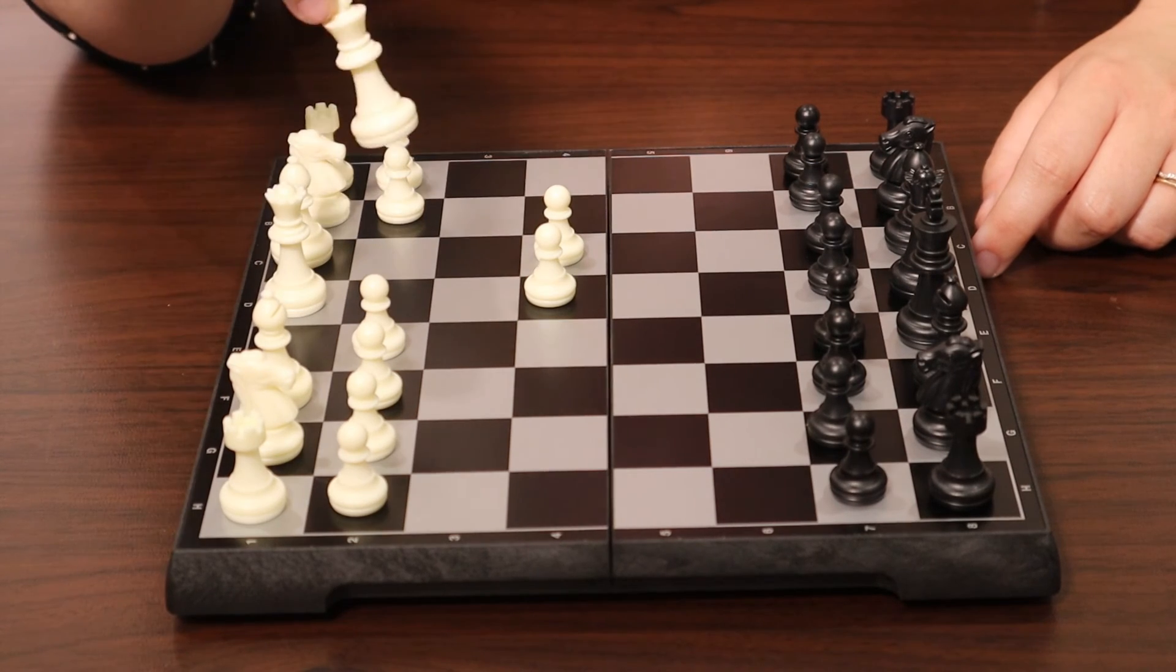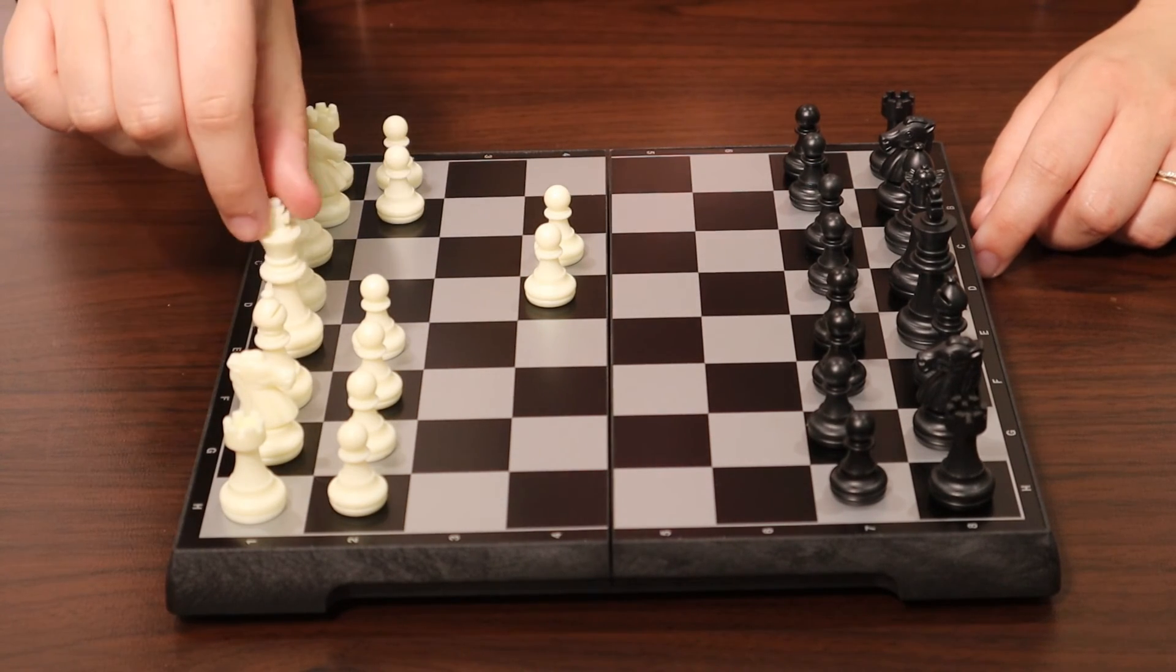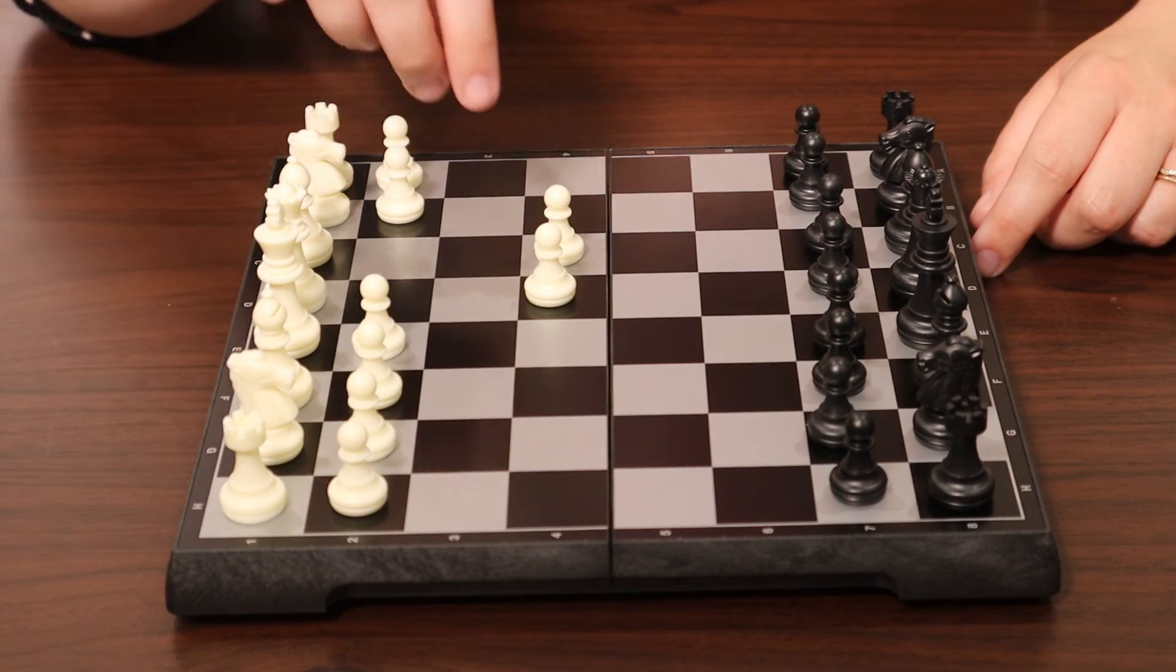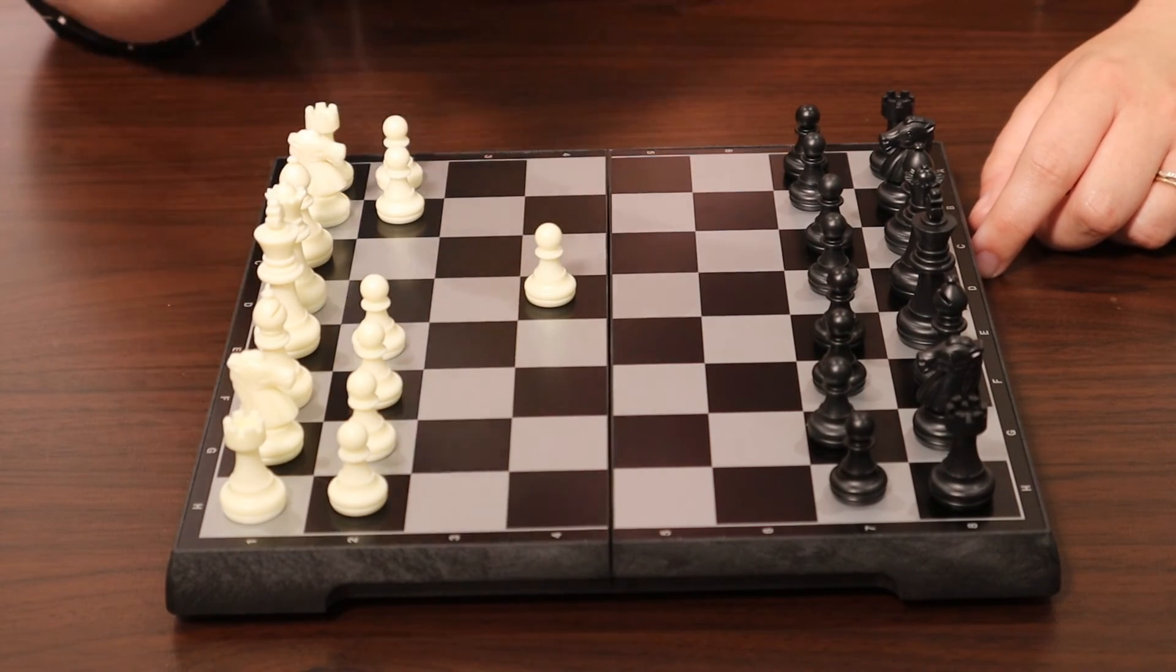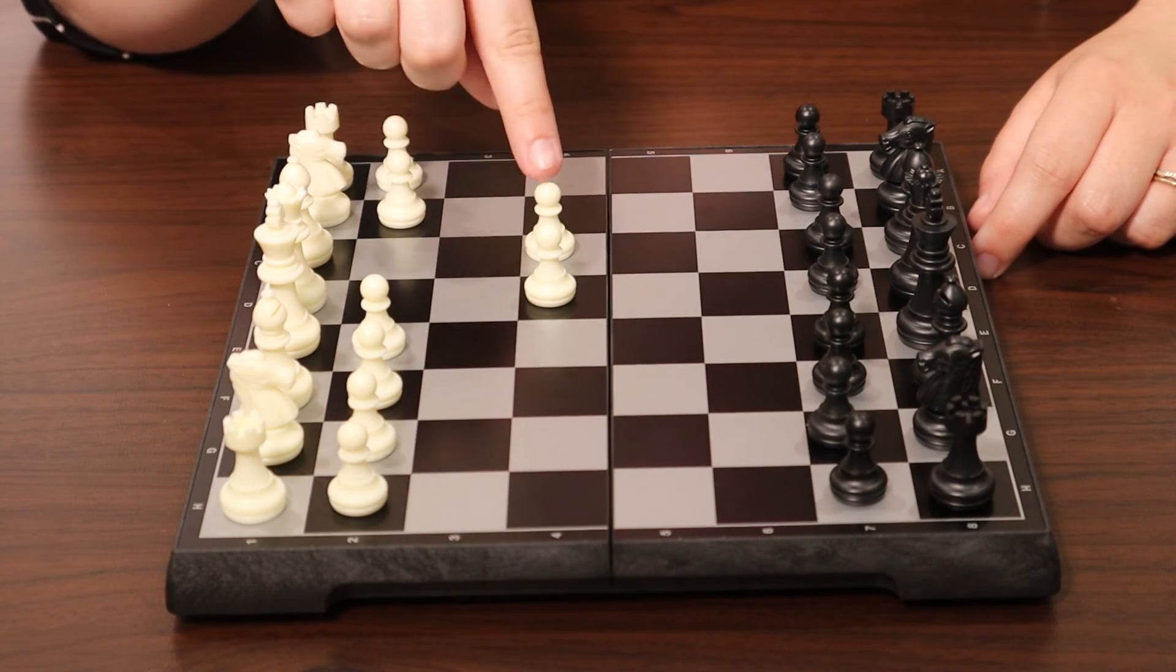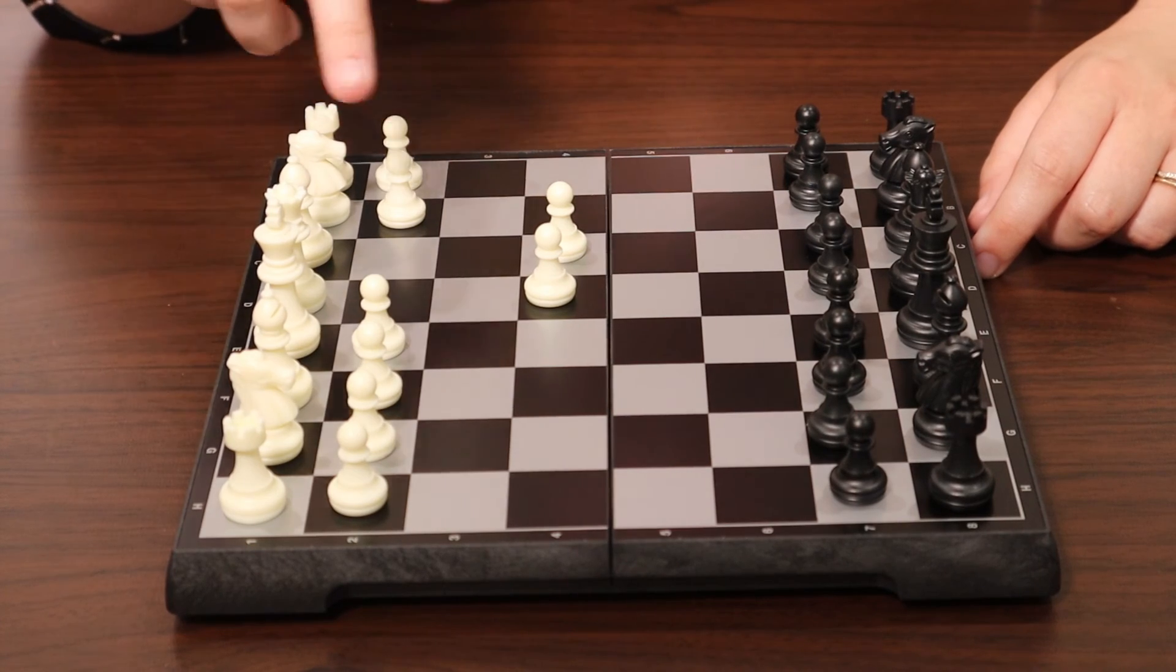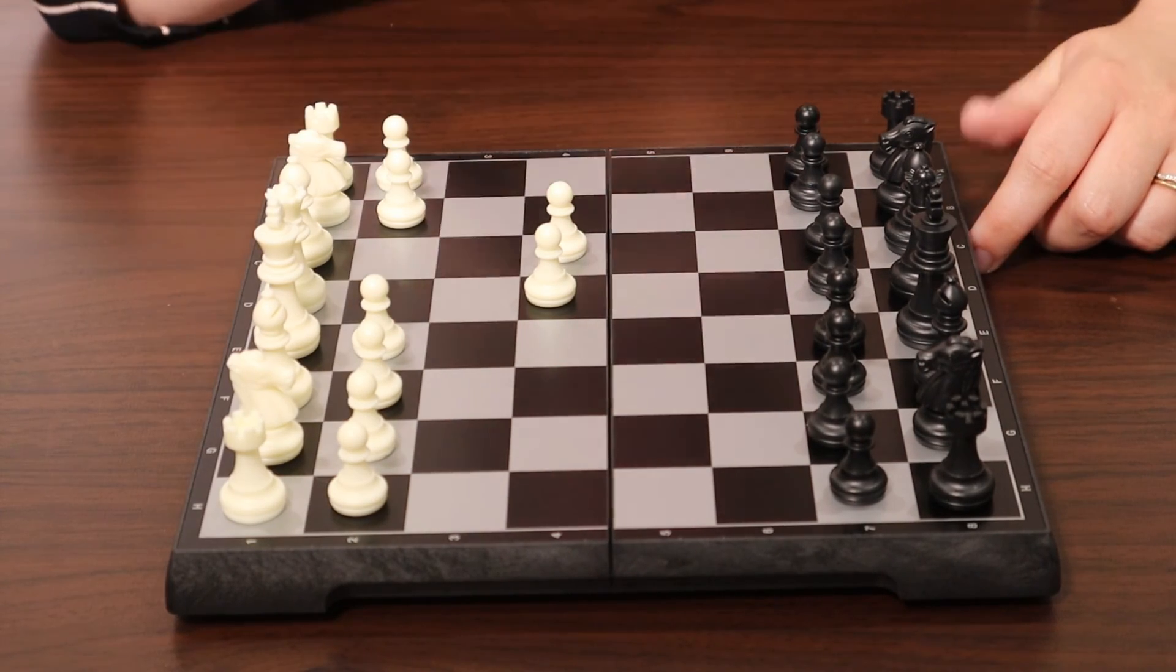The king can go anywhere but only one space at a time. And the pawns cannot go backwards. So if it's out of its home where it lives, it has to go forward. It cannot go back home.